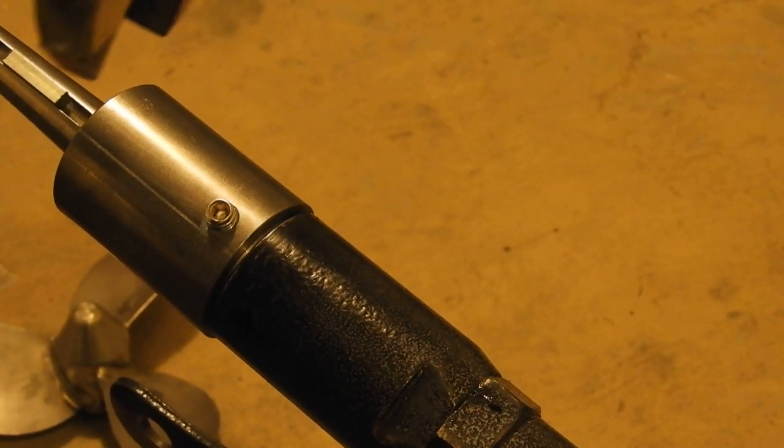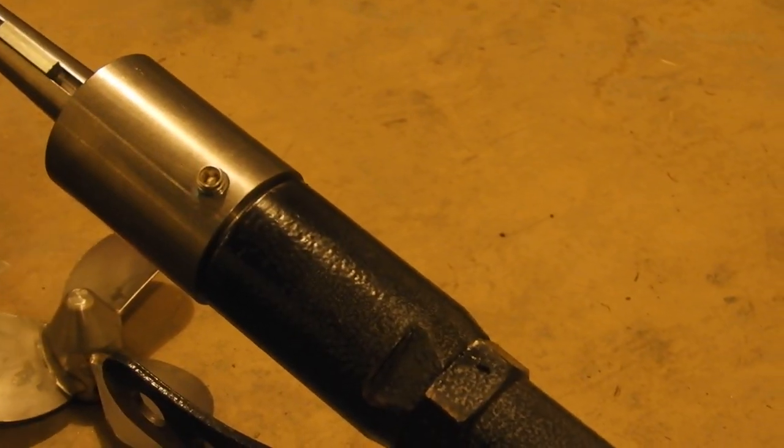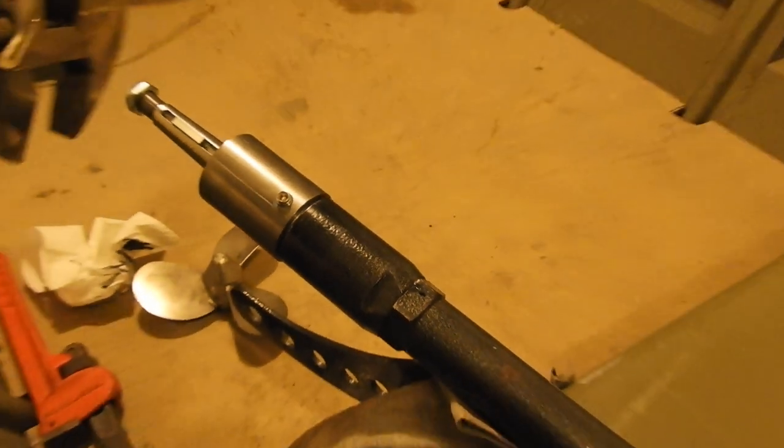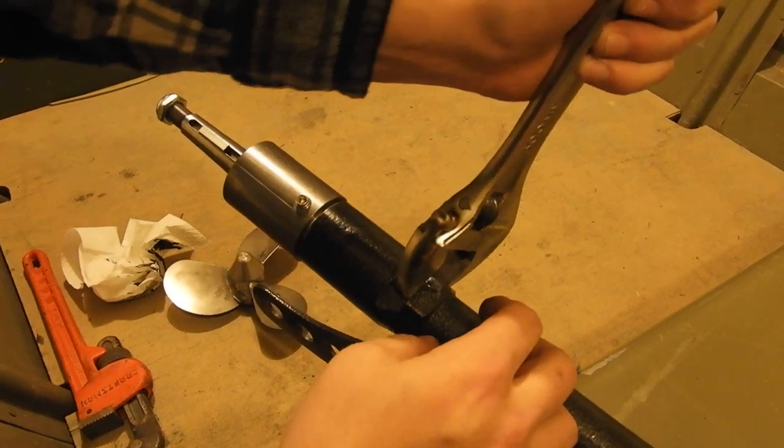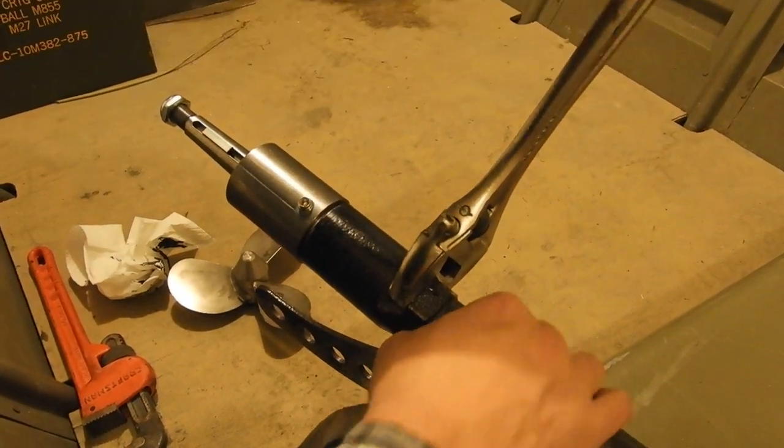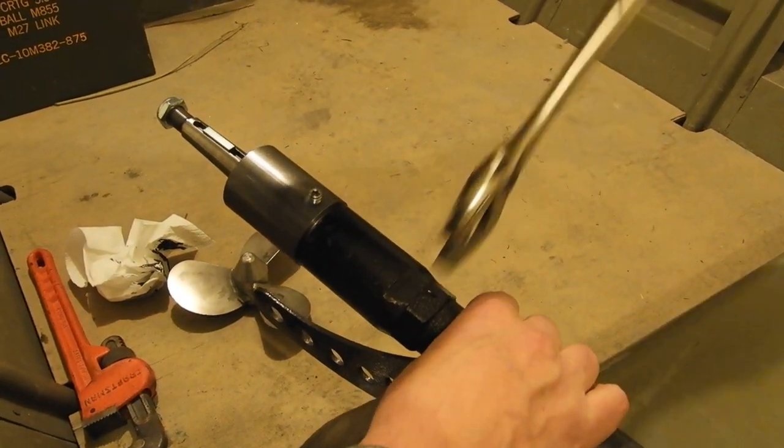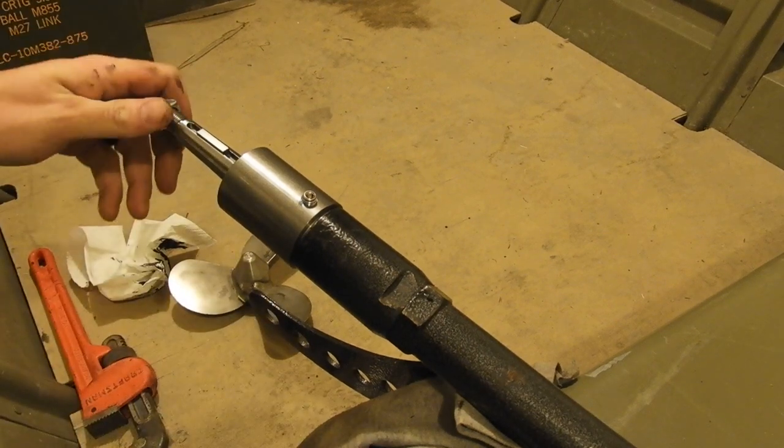Bring your crescent wrench back. It doesn't have to be super tight. Just get enough to hold it on there. And that's it. Done.